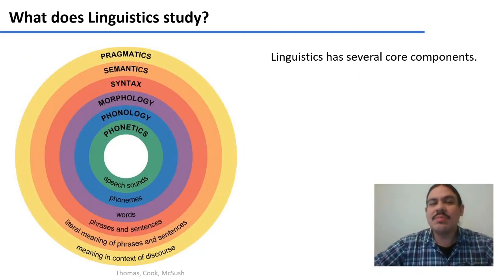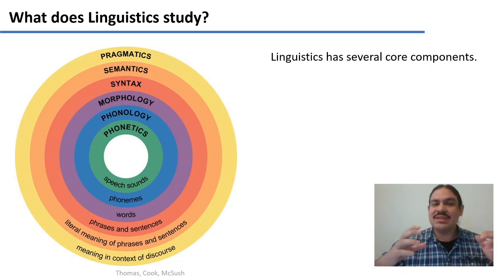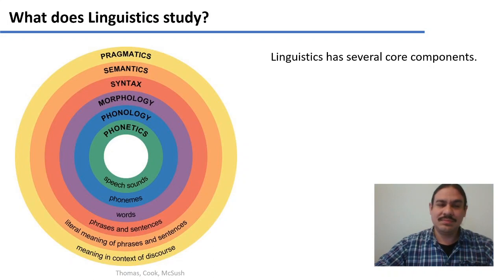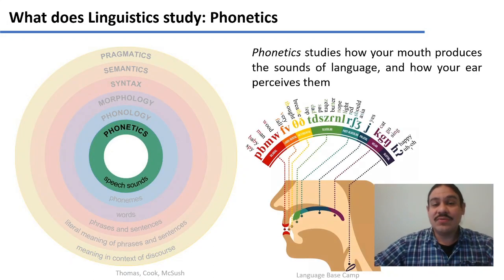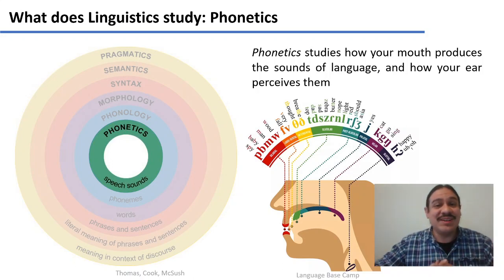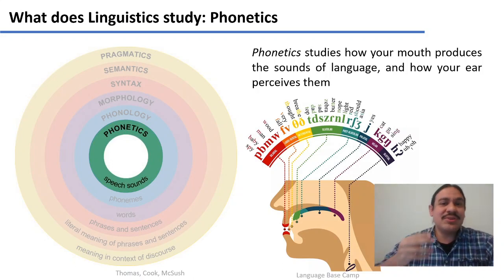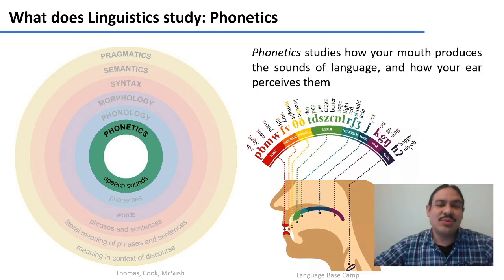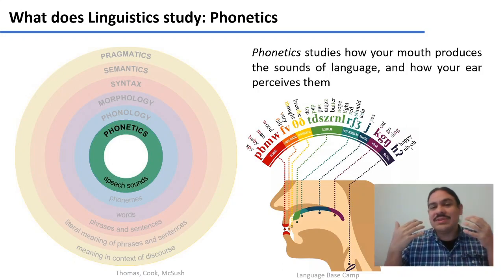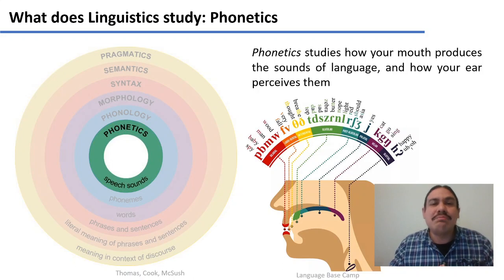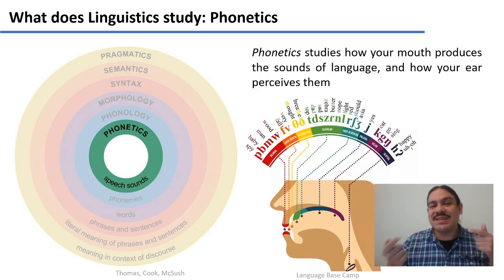We have several core components of linguistics, and we believe that languages can be described using these core components. The first one is phonetics — and by the way, I am a phonetician by training. Phonetics studies how your mouth produces the sounds of language and how your ear perceives them. For example, not all sounds are made the same. If you say something like 'mom,' the part of your mouth that's moving is mostly your lips.